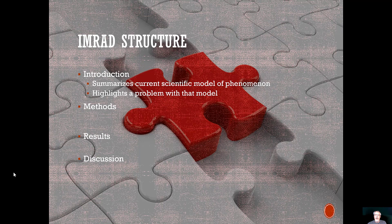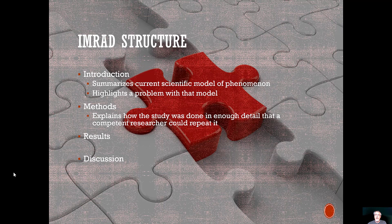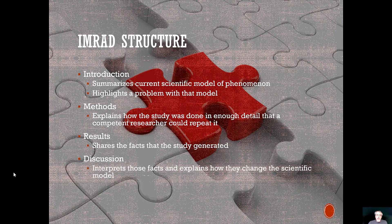The methods section of the paper then explains how the study was done, and it's given in enough detail that a competent researcher could repeat the study if they wanted to. The results section is where the researchers will share with their audience what they found. What facts did the study generate?